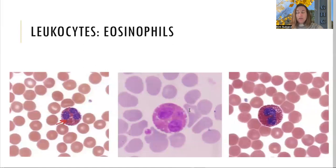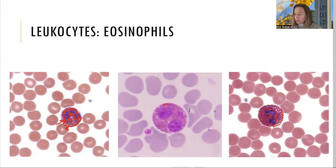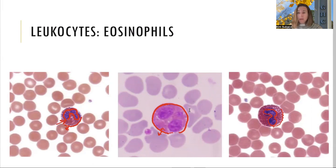Next are eosinophils. Their giveaway is the red coloration on their granules — their granules soak up the eosin dye in the stain, giving them a reddish color. On a slide this looks similar to red blood cell color, with beautiful red granules contrasting against a purple nucleus. Even on older slides with faded staining, the reddish color remains distinguishable.